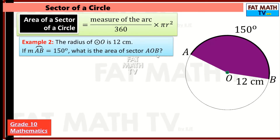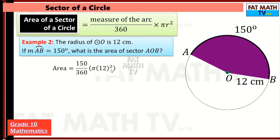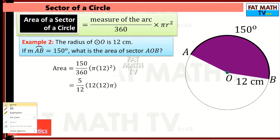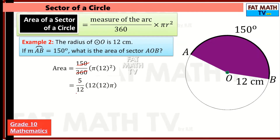Another example: the radius of circle O is 12 centimeters, and arc AB measures 150 degrees. What is the area of this sector? Same formula: 150 over 360 times pi r squared. Simplify by dividing by 30 — 150 becomes 5, and 360 becomes 12.